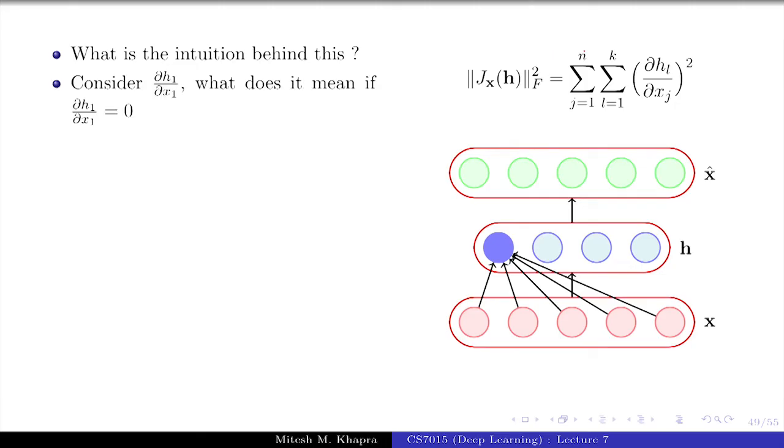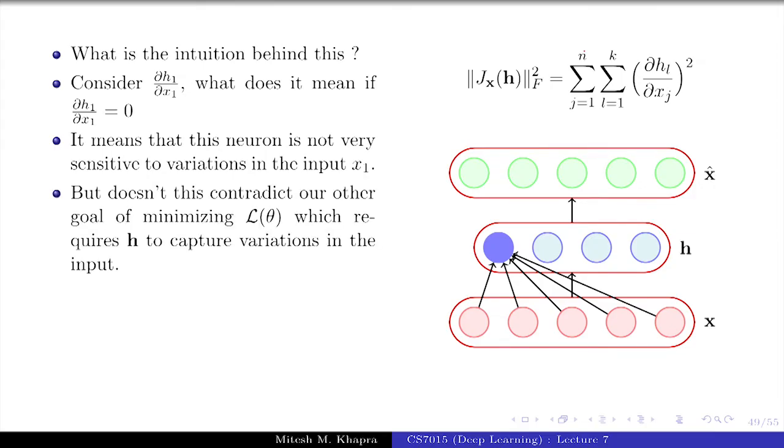What would happen if one of these guys, say ∂h_1/∂x_1, actually goes to zero? What does that mean? h_1 is not sensitive to variations in x_1. But what was our original mandate? What did we want these neurons to capture? We wanted the neurons to capture these important characteristics. If x_1 changes, we want h_1 to change. Do you see this?